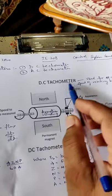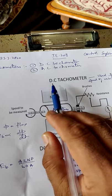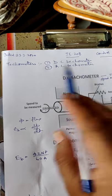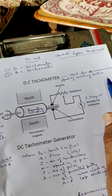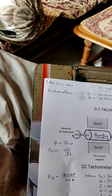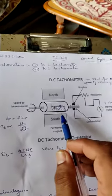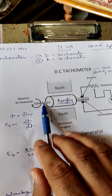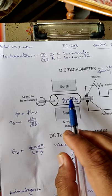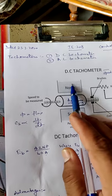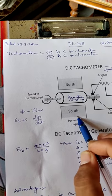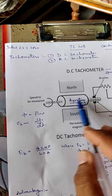First we will discuss the DC tachometer. Tachometers are used for measurement of speed of rotating bodies. DC tachometer is also used for measurement of speed of rotating bodies. As for its construction, this is the shaft and this is the armature. There are two poles: north pole and south pole. Here is the armature winding.